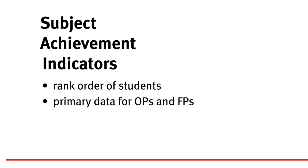SAIs are the primary input data used by the QCAA for the scaling process used to calculate overall positions, known as OPs, and field positions, known as FPs. The highest achieving student in a subject group is assigned an SAI of 400, and the lowest achieving student is assigned an SAI of 200.